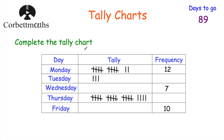Here's a tally chart and we've been asked to complete it. Feel free to pause the video and try this question yourself. For Monday we've got a bundle of 5 and then 5, so it's 5, 10, 11, 12 — so 12 is the frequency. For Tuesday we've got 1, 2, 3, so let's put 3 in there.